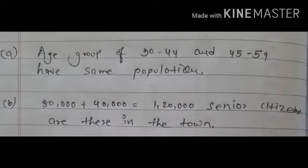Now answering the questions. A: which two age groups have the same population? The 30 to 44 and 45 to 59 age groups both have a population of 1,20,000 — they are the same. B: all persons in the age group 60 and above are called senior citizens — how many senior citizens are there in the town? The 60 to 74 group has 80,000 and above that 40,000, so the total is 80,000 plus 40,000 equals 1,20,000 senior citizens in the town. It's very easy — just practice it. Thank you.